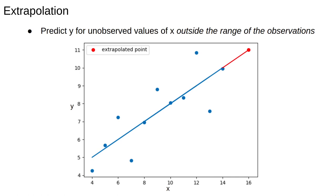Extrapolation refers to making predictions outside the range of the measured data. In practice all we do is plug the value where we want the prediction into the model we have fit. Compared to interpolation, extrapolation is often more useful — we're predicting the future rather than the past. However, it's also more error-prone and difficult to do rigorously, because when we go outside the range of our observed data we have fewer constraints. Within the range, the model function has to stay close to the observed data, so it's hard to be spectacularly wrong when interpolating.